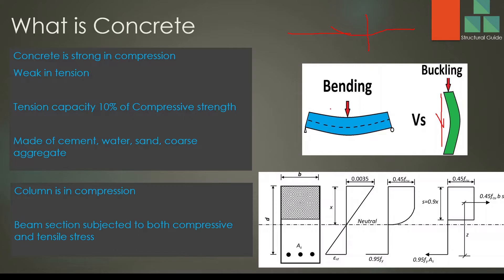When it comes to a beam, it is subject to both bending tensile and compressive stresses. You can see here that this beam has tension at the bottom and compression at the top. When you have a bend, the top points are compressed and the bottom points are in tension. Therefore, where we have tensile stresses, we have to provide the reinforcement.